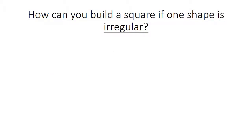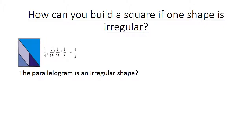How can you build a square if one shape is irregular? The parallelogram is an irregular shape. The longer sides are equal to the sides of some of the other shapes.